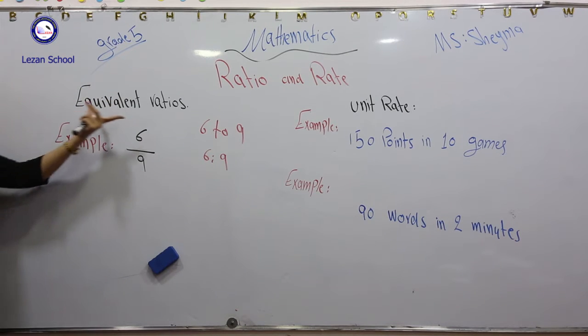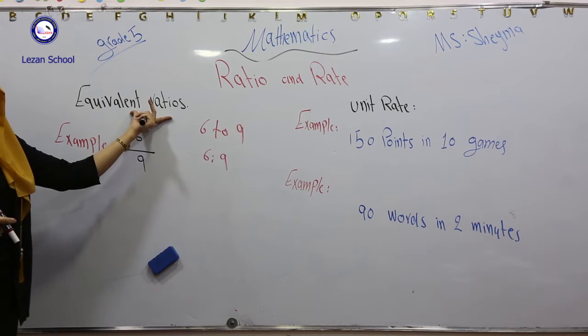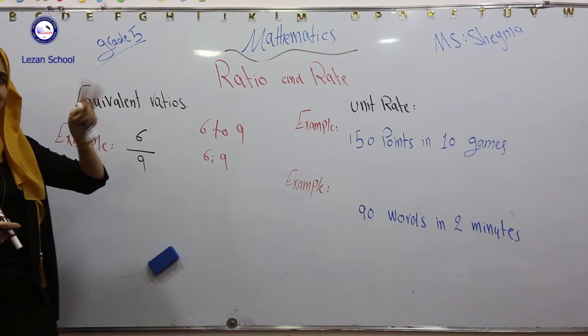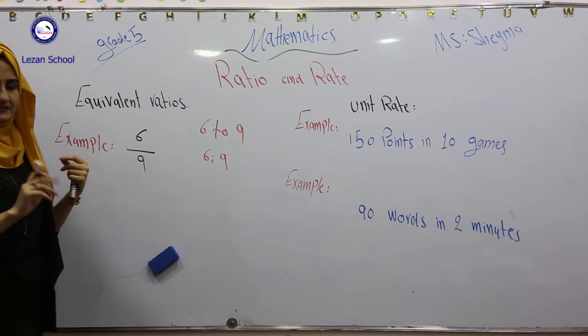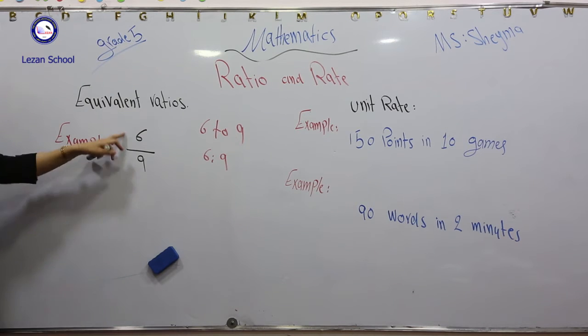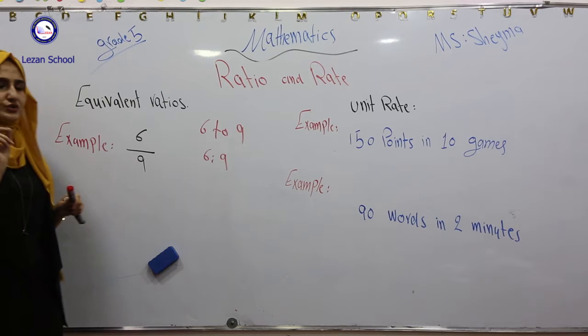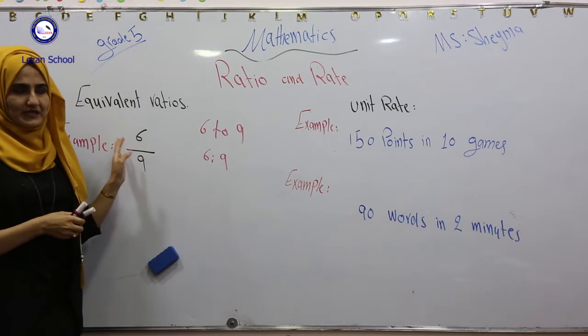In this example we have equivalent ratio. What's an equivalent ratio? It's two ratios that name the same comparison. We have 6 over 9. Find two equivalent ratios for 6 over 9.